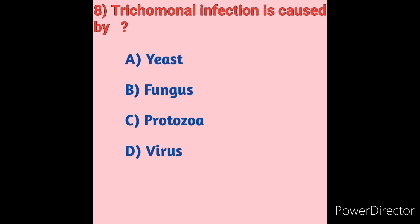Question 8: Trichomonas infection is caused by — Option A: Yeast, Option B: Fungus, Option C: Protozoa, Option D: Virus. Trichomonas infection, also called Trich, is a sexually transmitted infection caused by a parasite — specifically Trichomonas vaginalis, a protozoan parasite. Risk factors include multiple sexual partners and not using condoms. Option C — protozoa — is the correct answer.